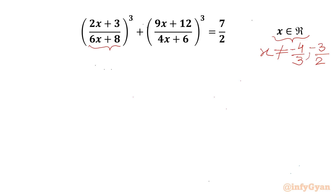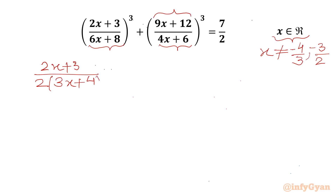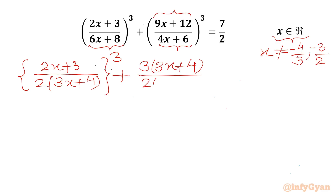From the denominator I can take 2 as common, and from the numerator I will take 3 as common. So I can write (2x+3) / [2(3x+4)] whole cube, plus 3(3x+4) / [2(2x+3)] whole cube. The RHS is 7/2.